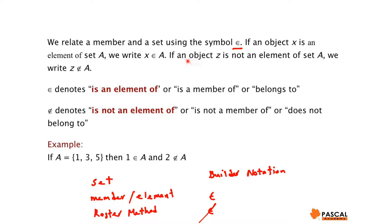And if an object Z is not an element of set A, we write Z with this notation. The first notation denotes is an element of A. X is an element of A, is a member of A. X belongs to A.